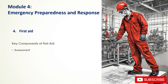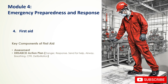Key components of first aid begin with quickly assessing the situation. The D-R-S-A-B-C-D action plan is a common first aid acronym: Danger — ensure safety for yourself and the injured person; Response — check if the person is conscious by talking, touching, and shouting; Send for help — call emergency services if needed; Airway — check if the airway is clear; Breathing — check if the person is breathing; CPR — perform if the person is not breathing; Defibrillation — use a defibrillator if available.